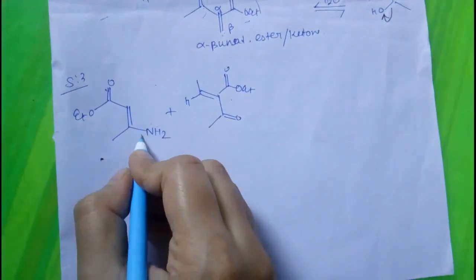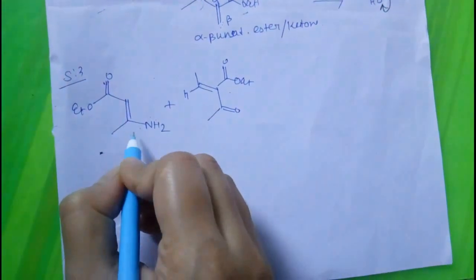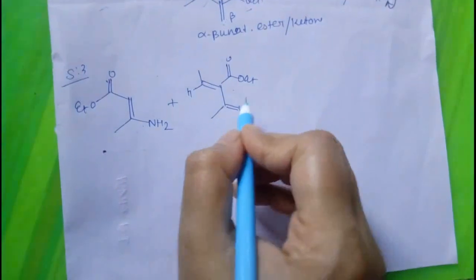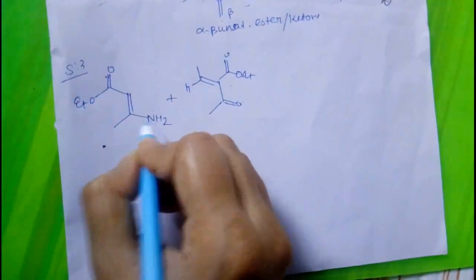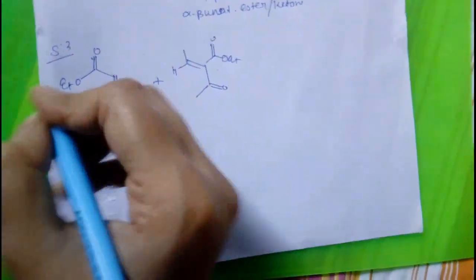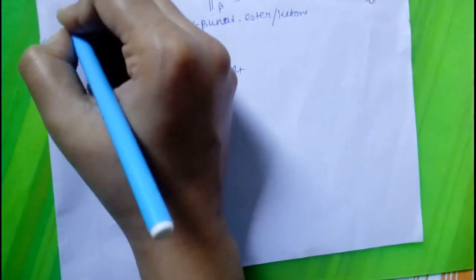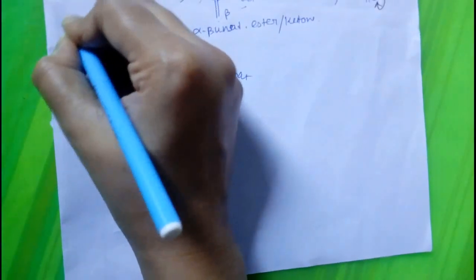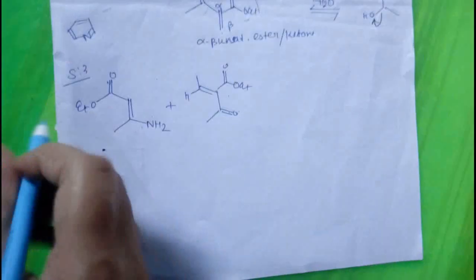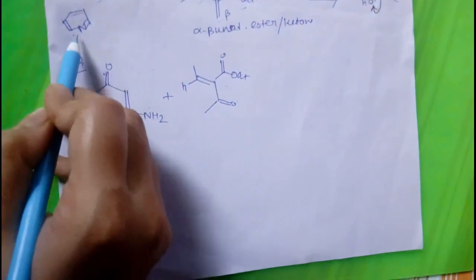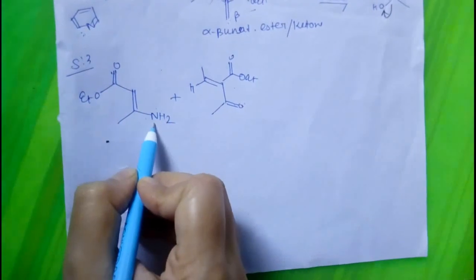Now, sigmatropic rearrangement will occur between this enamine and alpha-beta unsaturated ketone. How can we remember this? We can remember this by this way. Since pyridine has the formula like this, put your nitrogen in the bottom position. So, we keep this nitrogen also in the bottom position.